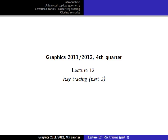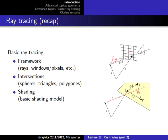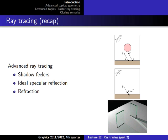Good morning everyone. This is the last lecture, finishing up the course and the ray tracing part we started last time. Last time we covered the basic framework for ray tracing — how to create and describe rays mathematically, calculate intersections with basic shapes like triangles, polygons, and spheres, and briefly touched on the shading model. We also discussed more advanced shading techniques that fit naturally into the ray tracing framework to create realistic effects.